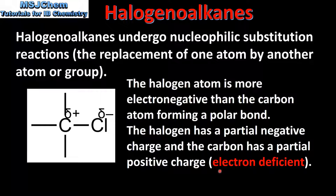We say the carbon is electron deficient. The carbon atom has a positive dipole and the chlorine atom has a negative dipole. This is due to the difference in electronegativity between the carbon atom and the chlorine atom.